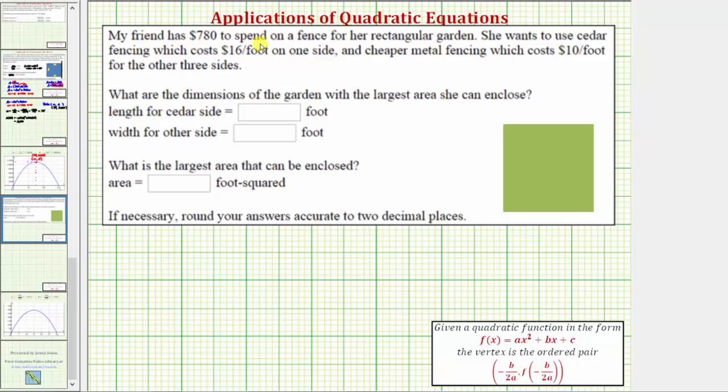My friend has $780 to spend on a fence for her rectangular garden. She wants to use cedar fencing, which costs $16 per foot on one side, and cheaper metal fencing, which costs $10 per foot for the three other sides. What are the dimensions of the garden with the largest area she can enclose, and what is the largest area?